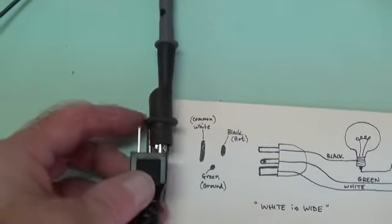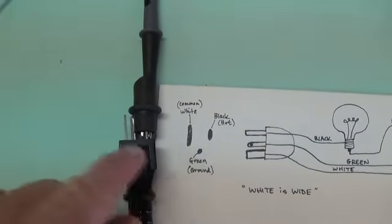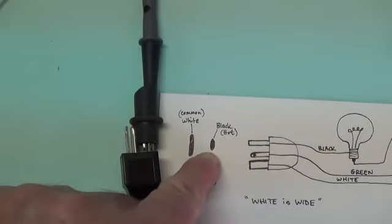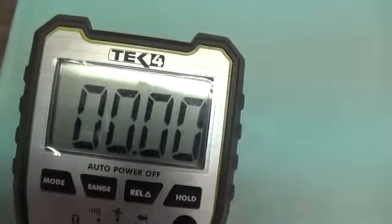I have the ground lug at the bottom, like in the drawing, and the right-hand blade should be black, which is hot. I've gone over here to the black wire, and as you can see, there are zero ohms. There is continuity.